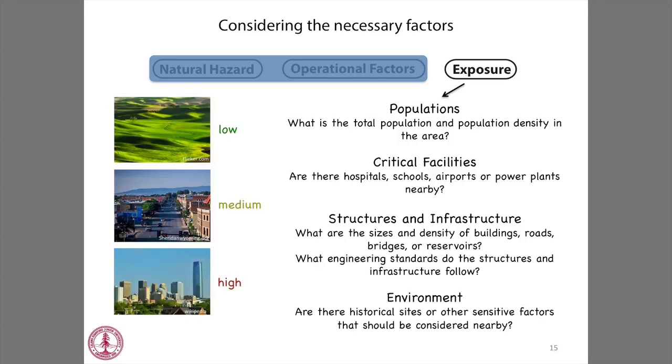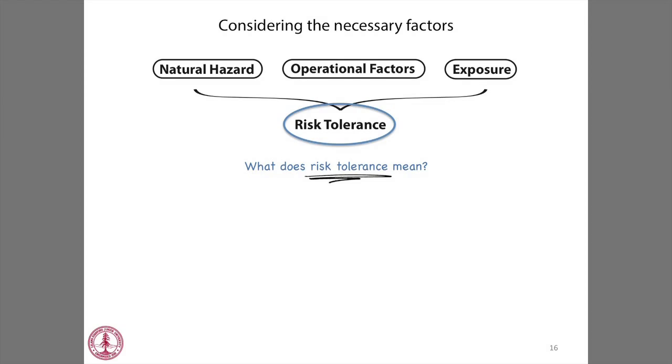Of course, it's important to consider the exposure — the communities we live in, the people we serve. You want to understand total population and population density near injection sites, whether hospitals, schools, and other critical facilities are present, what sorts of structures and infrastructure exist such as roads, bridges, and reservoirs, and to what engineering standards they were built, as well as thinking about the environment itself.